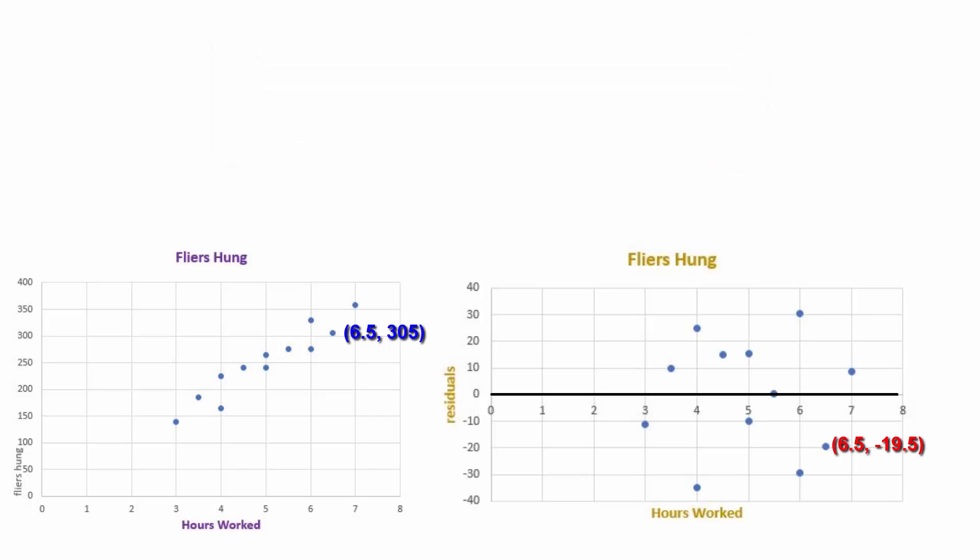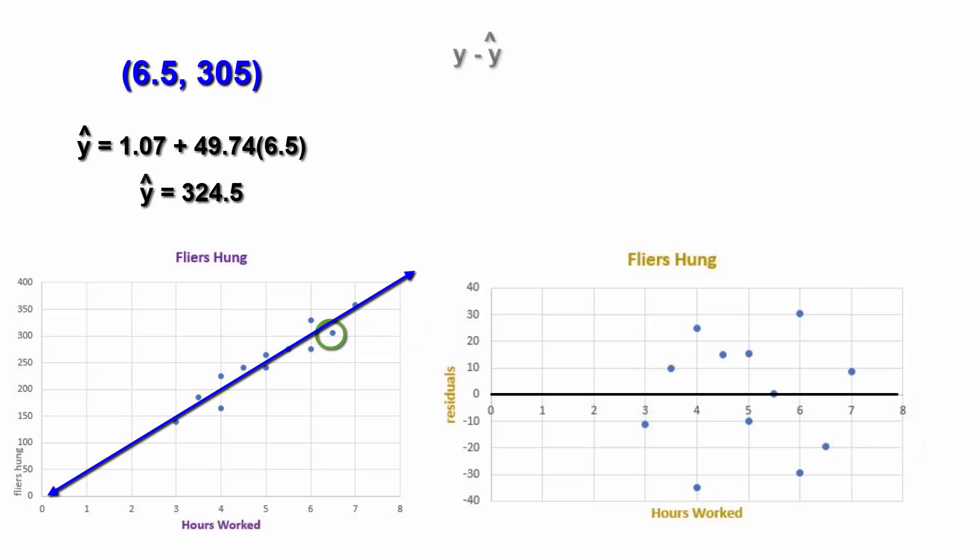Let's focus on the person who worked 6.5 hours and hung 305 flyers. They had a residual of negative 19.5, which is 19.5 flyers below the predicted value found on the least squares regression line. Look where that point translates to on the residual plot. When X is 6.5, the Y coordinate is negative 19.5.